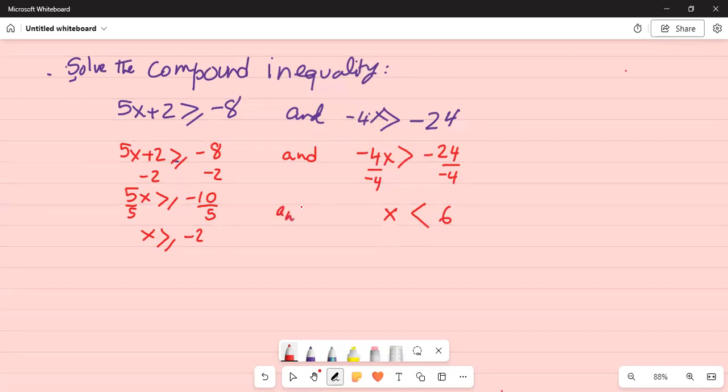So x is greater than or equal to minus 2, and at the same time x is less than 6. Let's draw the number line.